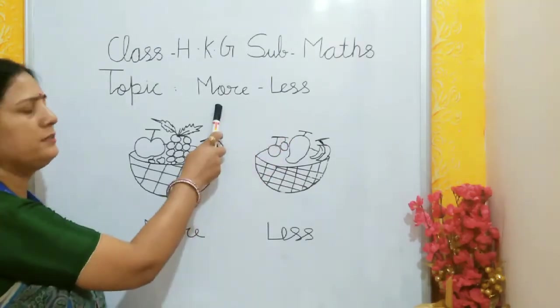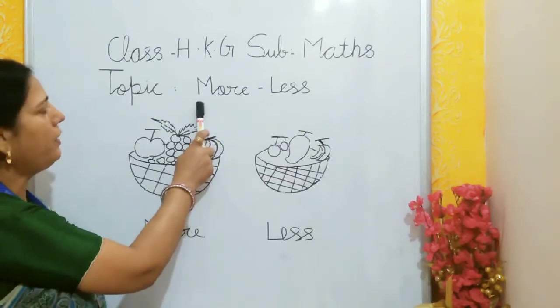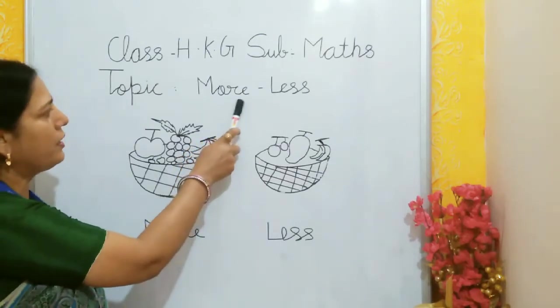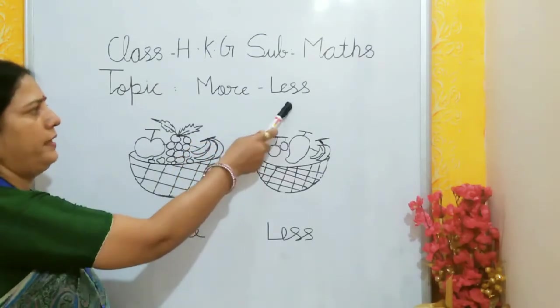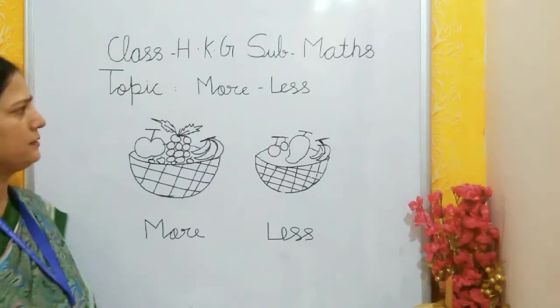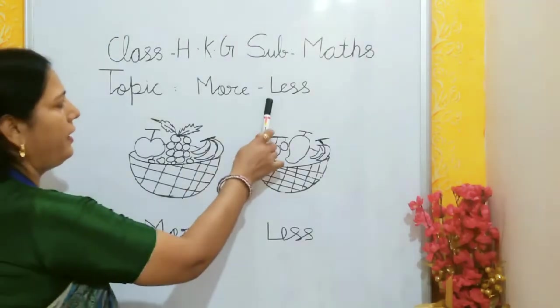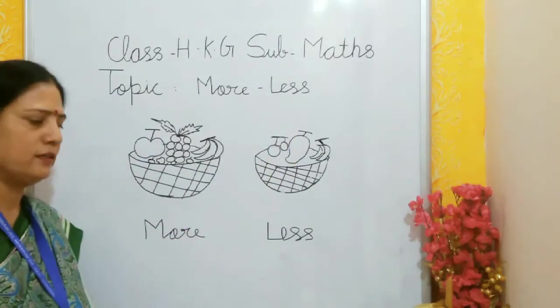What is the spelling of More? L-O-R-E, More. And what is the spelling of Less? L-E-S-S, Less.